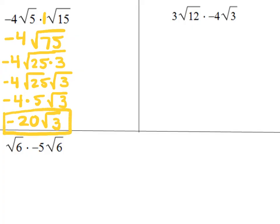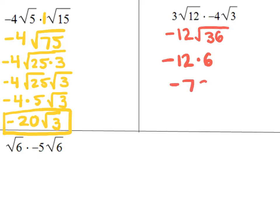Pause the video and try the one on the top right on your own. For this example, multiplying what's outside gives 3 times negative 4, which is negative 12. Inside the square root I have 12 times 3, which gives 36. To simplify, the largest perfect square that divides into 36 is 36 itself. The square root of 36 is 6, so this becomes negative 12 times 6. Multiplying negative 12 times 6 gives an answer of negative 72.